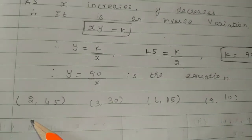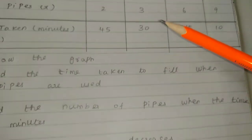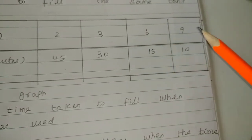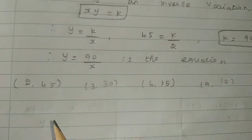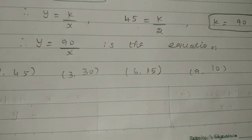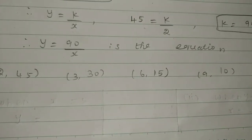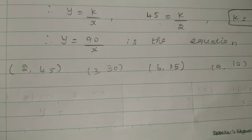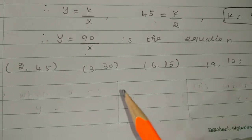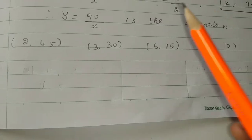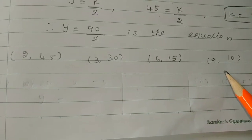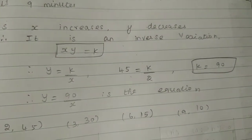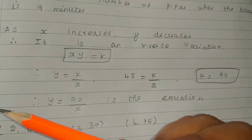If we have the points, we will see: 2, 45; 3, 30; 6, 15; 9, 10. Look at the points we have here. Next, we will plot the points. The values are placed in the diagram.